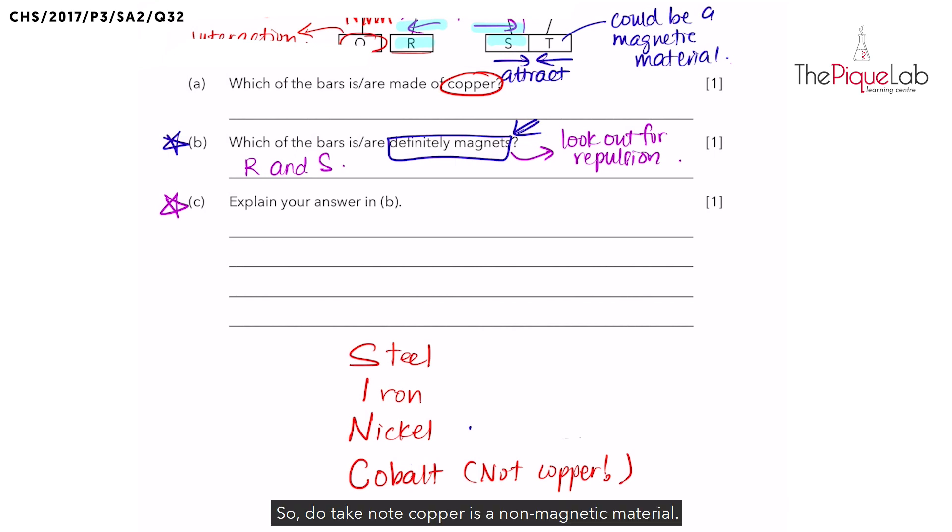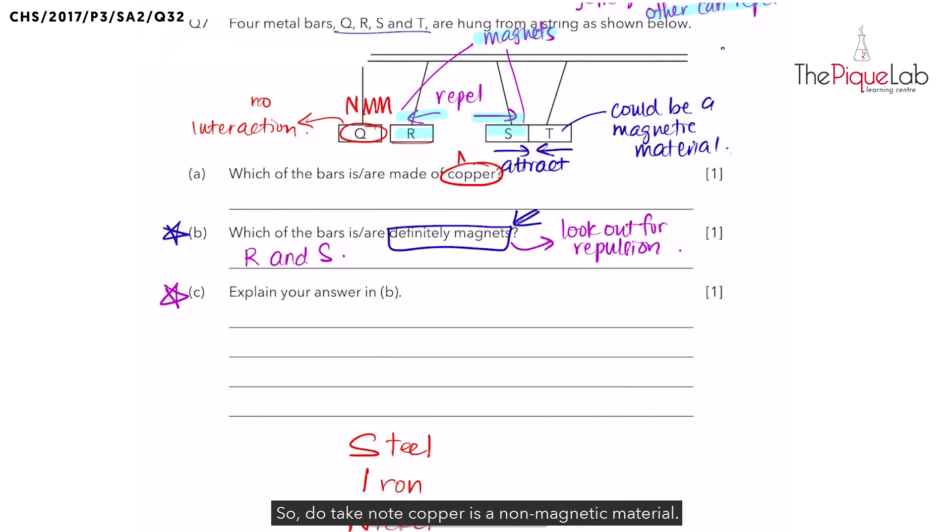So do take note, copper is a non-magnetic material. And which bar is a non-magnetic material? Yes, it is bar Q.